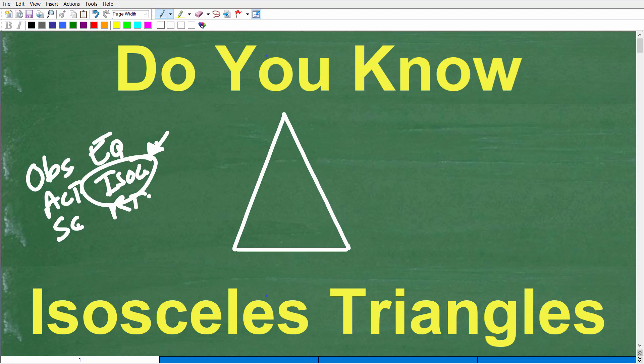So if you know what an isosceles triangle is, and if you know a few characteristics about this type of triangle, go ahead and put that into the comment section. I'm going to show you all of this in a second. This is going to be a short little video.